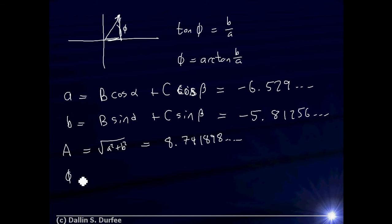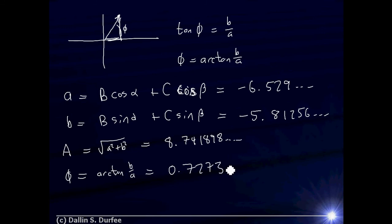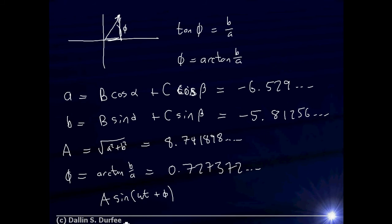Finding my phase shift, that's just the arctangent of b over a. Plugging that into the calculator gives 0.727372... So now I have the amplitude and phase. I plug that in and I've got my sum — I add the two sine waves and this is the sine wave I get. But I'm not going to stop here, even though that's all the problem asked. I'm going to check my work.